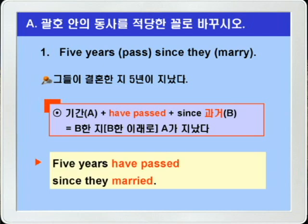따라서 정답은 동사 past는 현재완료인 have passed, 이렇게 바꾸고, marry는 과거시제인 married, 이렇게 바꾸면 되겠습니다. 이때 5 years를 단일 개념으로 취급해서 has passed라고 써도 되지 않느냐고 생각한 학생들이 있을지 모르겠는데, 이때 5 years는 결혼한 지 1년, 2년, 3년, 4년, 5년 이런 식으로 흐른 것으로 판단했기 때문에, 복수 취급해서 '5 years have passed since they married' 이렇게 쓰는 것입니다.